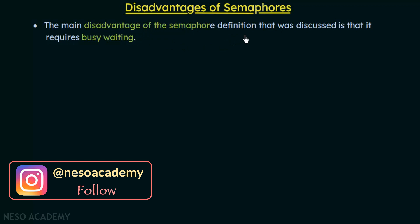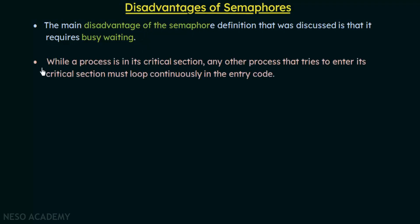The main disadvantage of the semaphore definition we discussed is that it requires busy waiting. By busy waiting we mean that while a process is in its critical section, any other process that tries to enter its critical section must loop continuously in the entry code — getting stuck in the while loop until the other process exits its critical section.